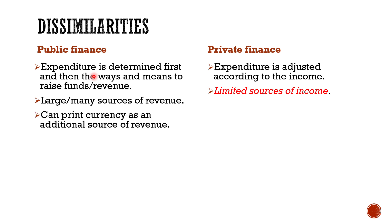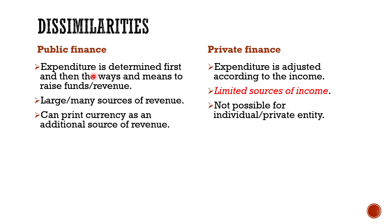Third, the state or government can print currency as an additional source of revenue, which is not possible for private individuals or entities. When hard-pressed, the state can resort to printing currency with the help of the RBI. During emergencies like war, it meets increased financial obligations by printing new currency. An individual cannot raise income by creating money. So deficit financing is possible in public finance but not in private finance.